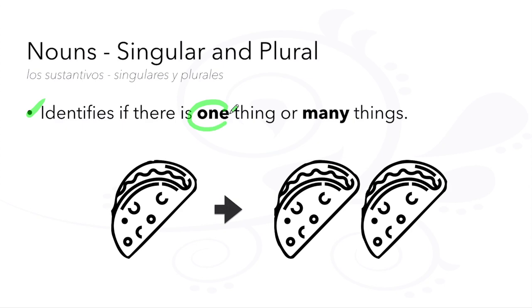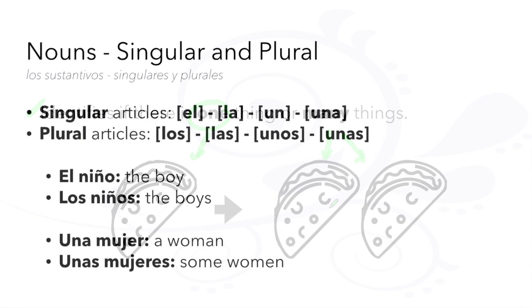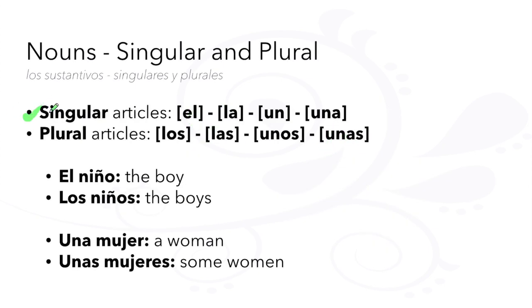Grammatical number lets us know if there is one thing or if there are many things. Singular articles for nouns are el, la, un, una. Plural articles are los, las, unos, unas.